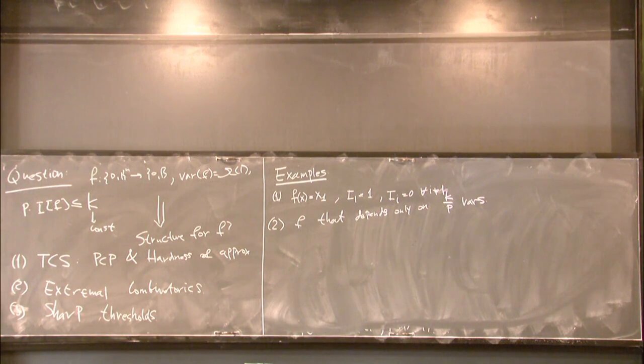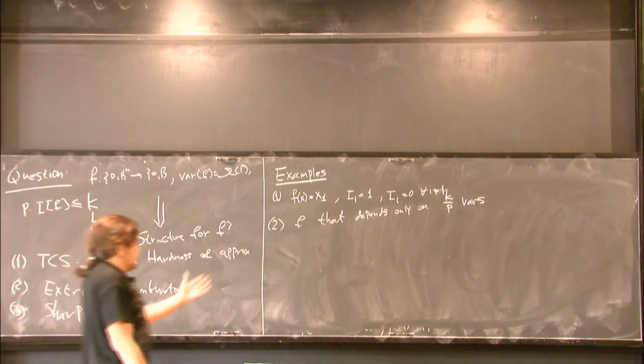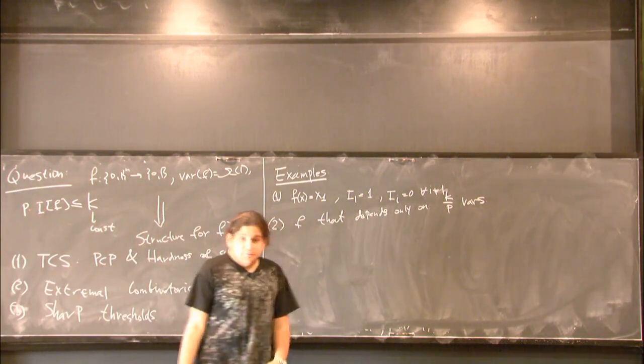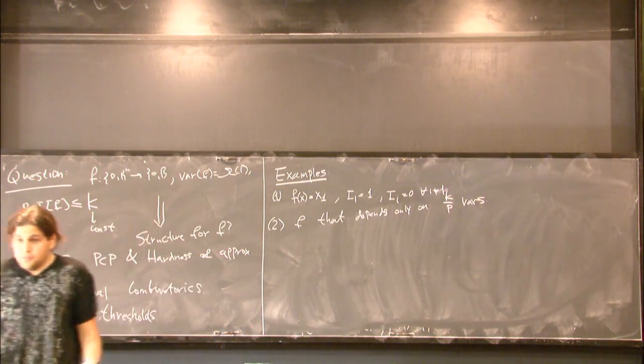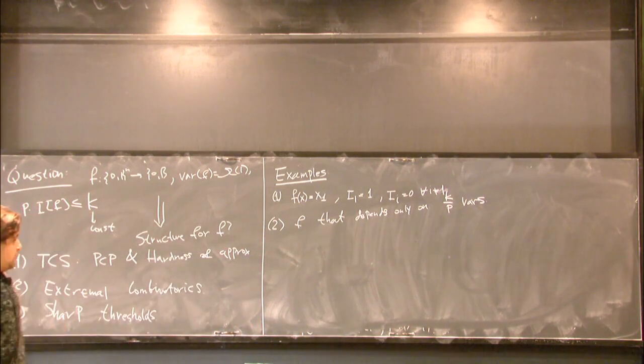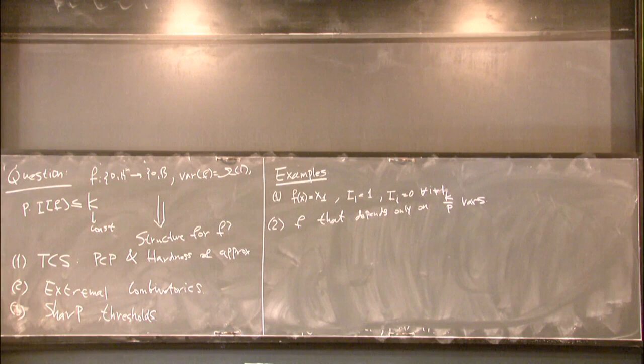And now, we come to this question. Is this essentially the only example of functions that have small total influence? And here, the distinction between p bounded away from 0 and p, which is little of 1, comes up.